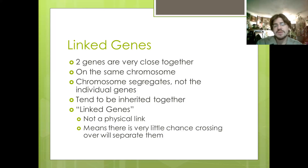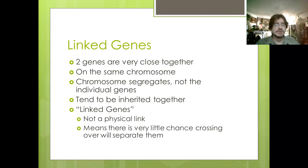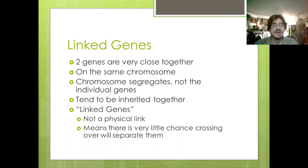Crossing over causes part of the chromatid to break off and recombine with a different chromosome. So when they're linked genes, they're so close together that it's highly unlikely that crossing over will separate them.